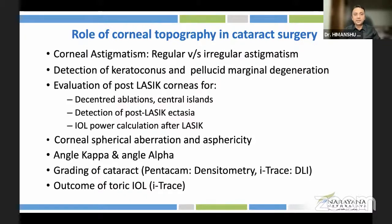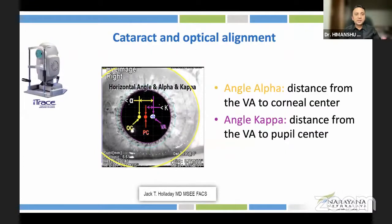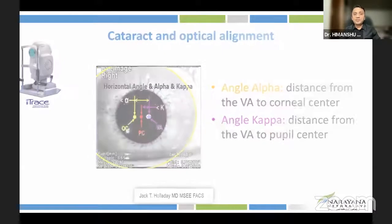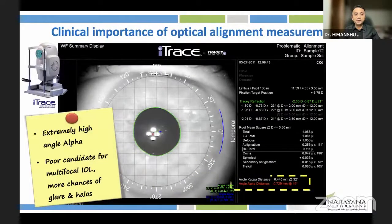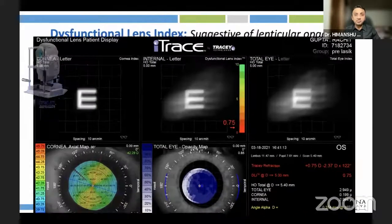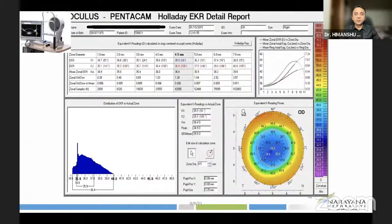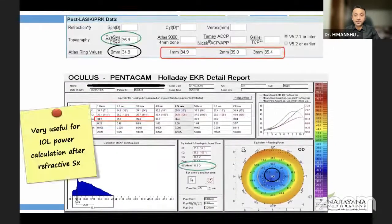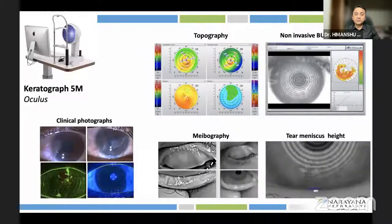Such instruments can also grade the cataract and assess toricity outcomes. Instruments like the iTrace can tell you about angle alpha and angle kappa — important because a significantly high angle alpha can make a patient a poor candidate for multifocal IOLs, potentially leading to glare and haloes. The dysfunctional lens feature helps detect irregularity in lens transparency and can diagnose cataract earlier. Pentacam also gives zonal K-values, which are extremely important in detecting IOL power, especially post-refractive surgery.